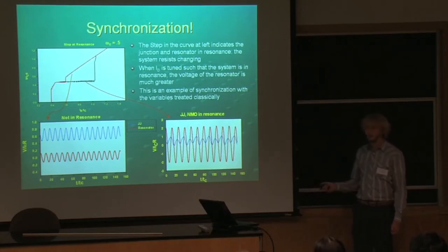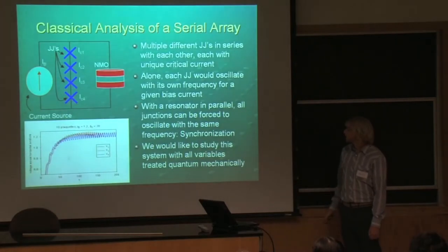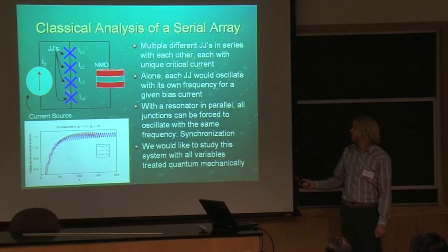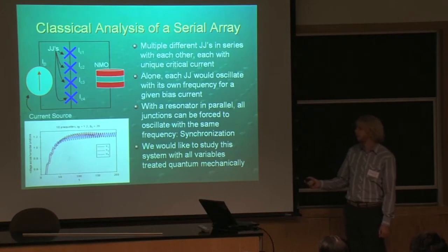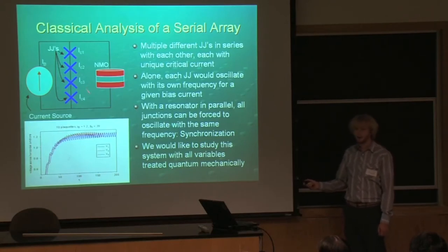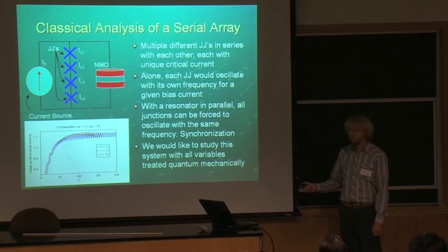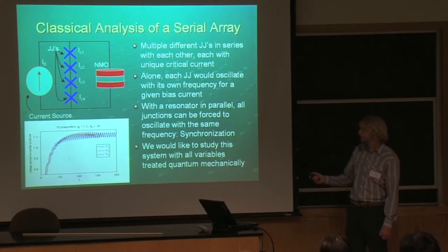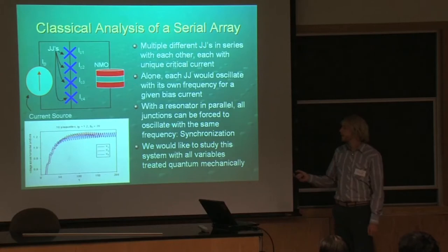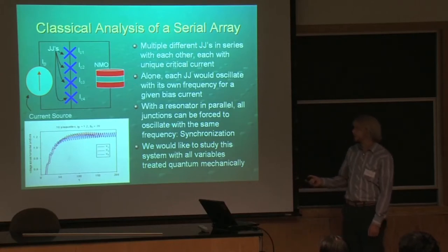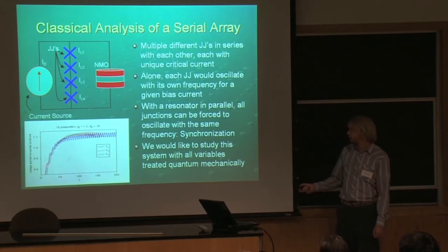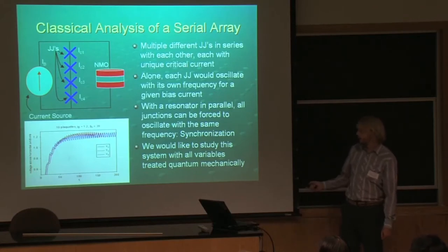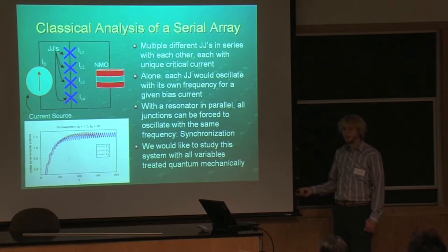This is an example of classical synchronization — classical resonance — because all the variables were treated classically. Another thing you can do classically is put multiple junctions in series across the NMO, in parallel with the NMO. Then all of these junctions, having different critical currents, would oscillate at different voltage frequencies given the same bias current. However, putting them in parallel with the NMO, we can force them to oscillate at the same frequency, which is a really good example of synchronization of the junctions. This graph shows how they start out, and then these voltages pretty much synchronize perfectly. Once again, this is a classical example of synchronization — all the variables were treated classically.